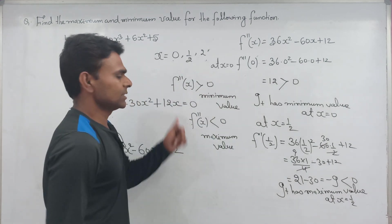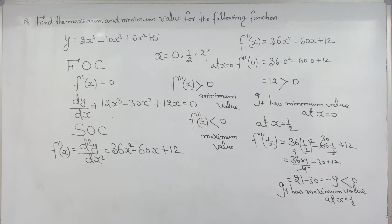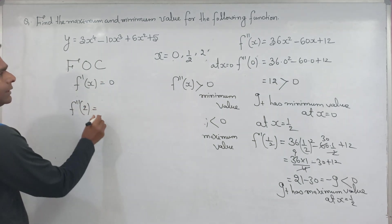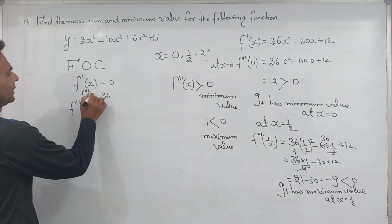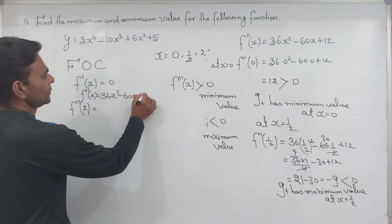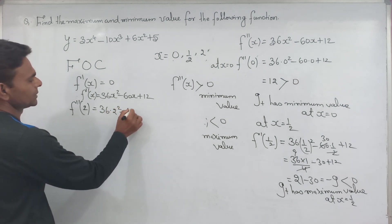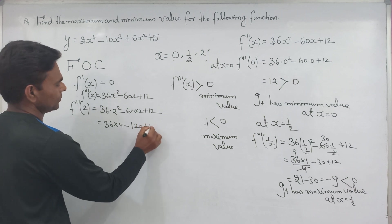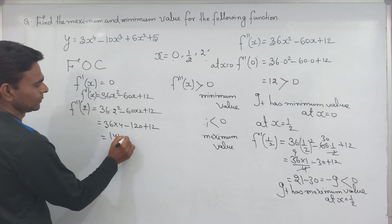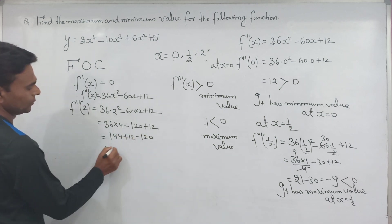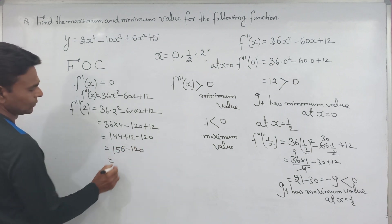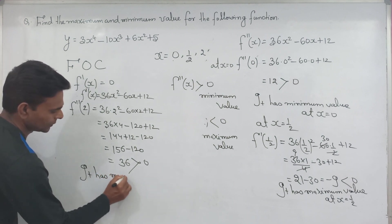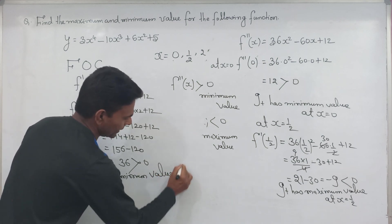Finally checking x equal to 2: f double dash equals 36 times 2 square minus 60 times 2 plus 12, which gives 36 times 4 minus 120 plus 12, equal to 144 minus 120 plus 12, which equals 36, greater than 0. Therefore it has a minimum value at x equal to 2.